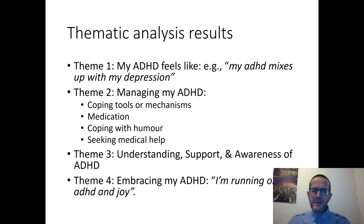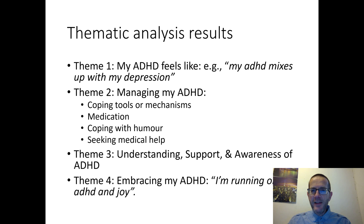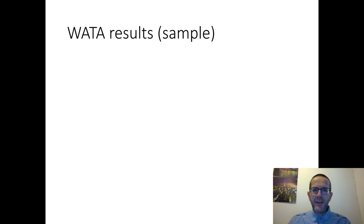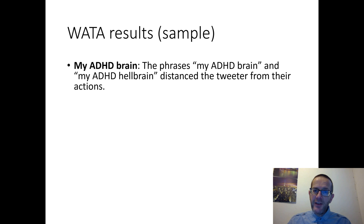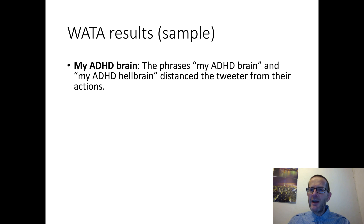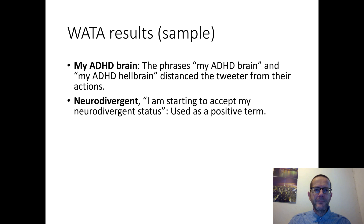And finally, there was a positive theme: embracing ADHD. For example, one tweet said something like "I'm running on my ADHD and joy." So there were a lot of positive takes on ADHD from the tweeters. Those were the four themes from the main thematic analysis results. For the word association thematic analysis results — this is a sample of them — one theme was "my ADHD brain," resulting from phrases like "my ADHD brain" and "my ADHD hell brain." The common theme was that tweeters distance themselves from their actions by referring to their brain as a separate entity.